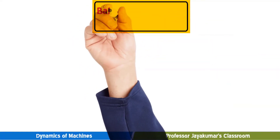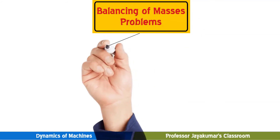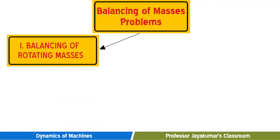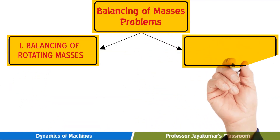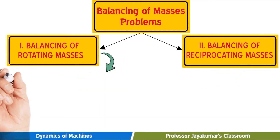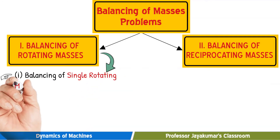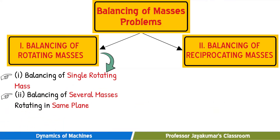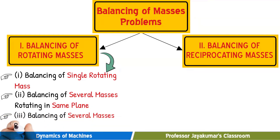For simplicity, balancing of masses problems can be broadly classified under two types: one is balancing of rotating masses, and the other is balancing of reciprocating masses. Under balancing of rotating masses, we will study three headings: balancing of a single rotating mass, balancing of several masses rotating in the same plane, and balancing of several masses rotating in different planes.